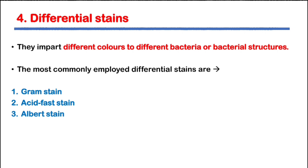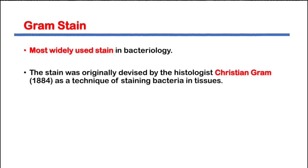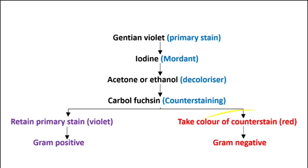The common differential stains are Gram staining, acid-fast staining, and Albert staining. Today we are going to handle Gram staining. Gram staining is the most widely used in bacteriology. It was invented or discovered by Hans Christian Gram, and it is 130 years old and is still followed for diagnosis.